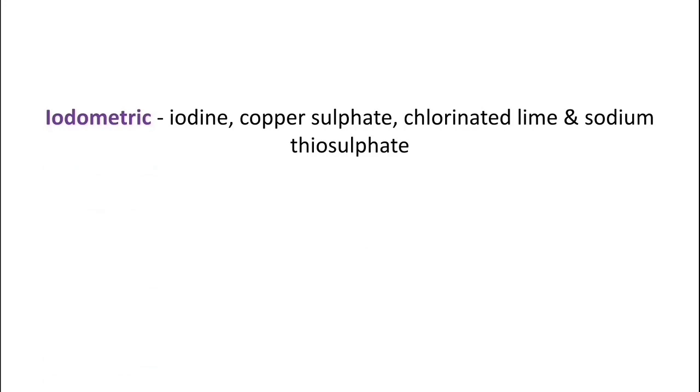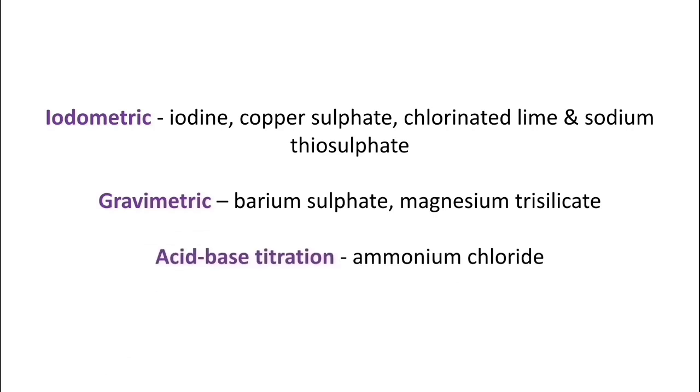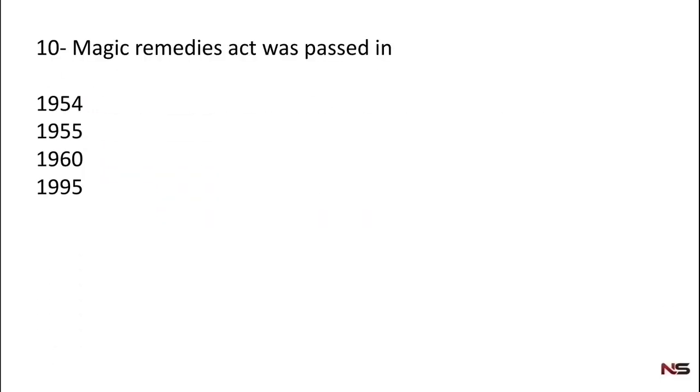Examples of compounds which are assayed by iodometric titration are iodine, copper sulfate, chlorinated lime, and sodium thiosulfate. Gravimetric method - barium sulfate, magnesium trisilicate. Ammonium chloride is used as acid-base titration method for assay.